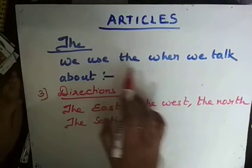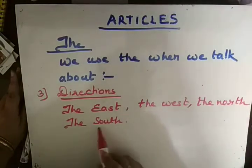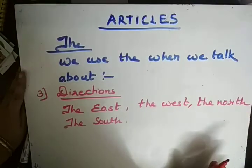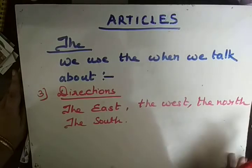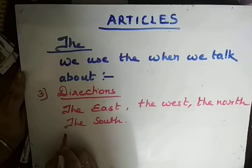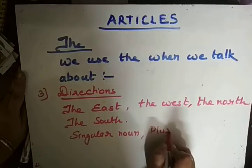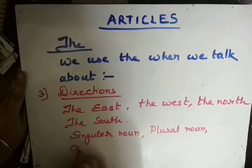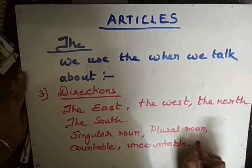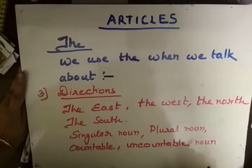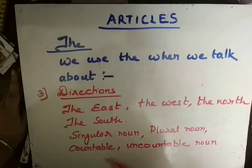We use THE when we talk about directions. The east, the west, the north, the south — when we talk about directions, we use THE. So these are three basic uses of THE. And one main thing to remember: THE is used before singular noun, plural noun, countable, and uncountable nouns. THE does not follow the rule that it only goes before singular or only plural — THE can be used before all types of nouns.